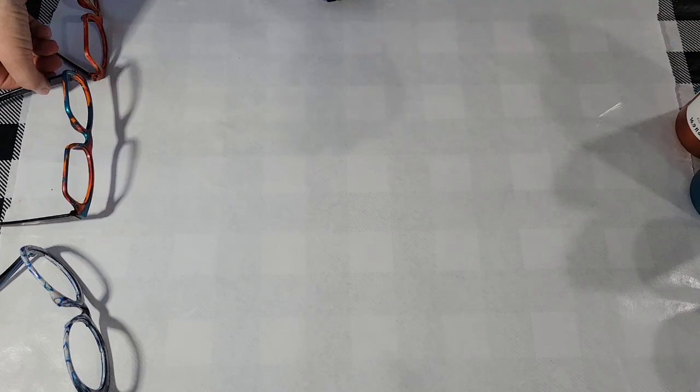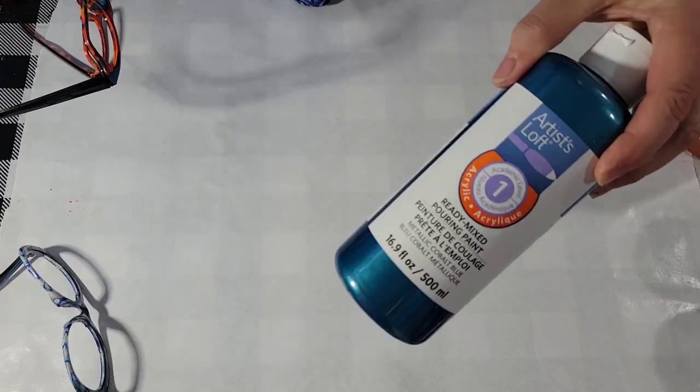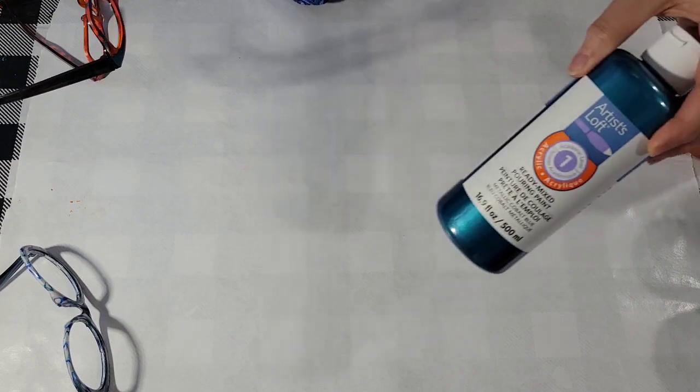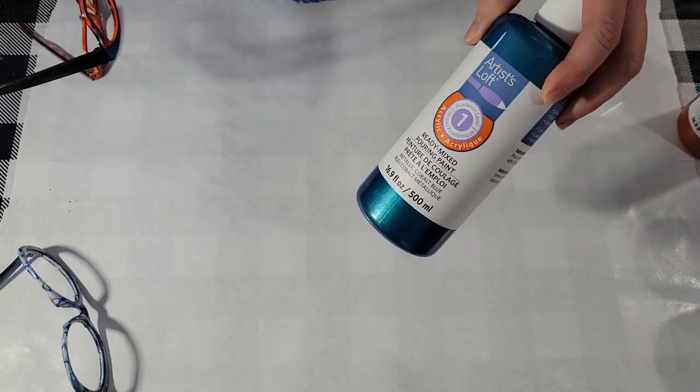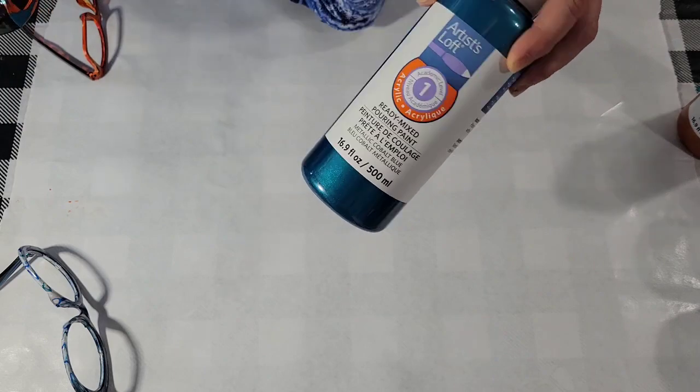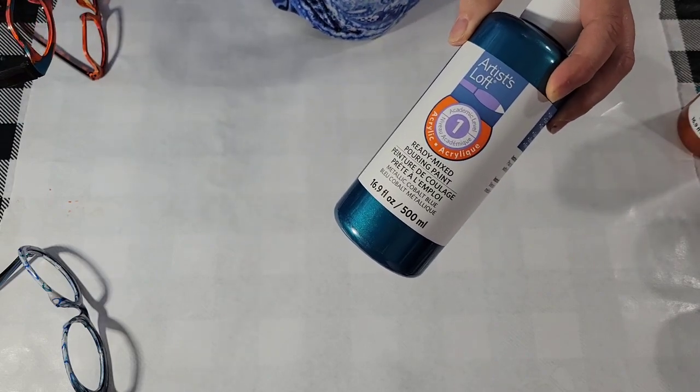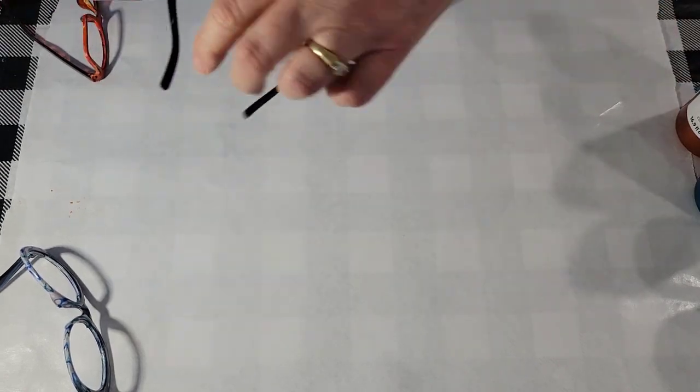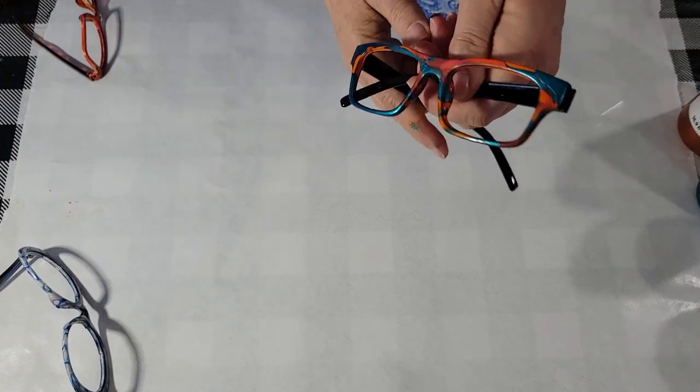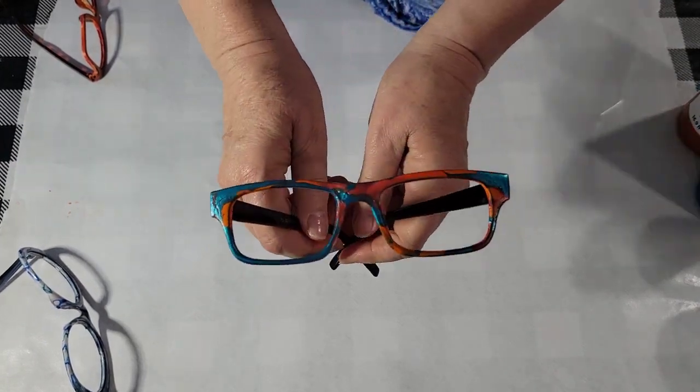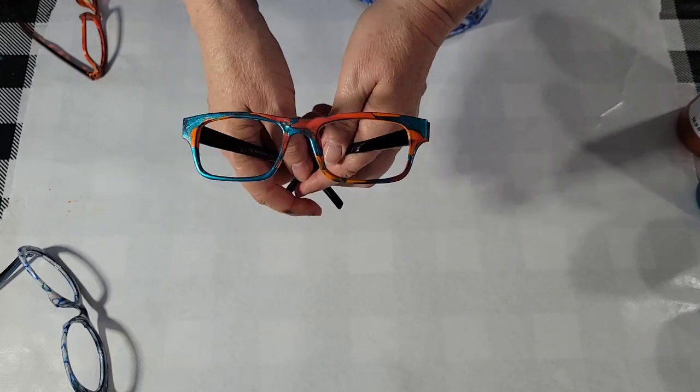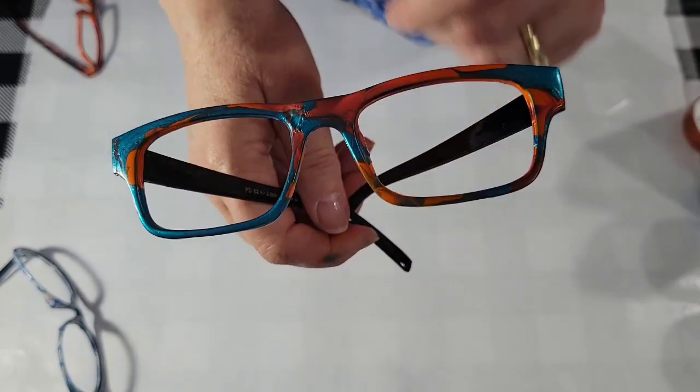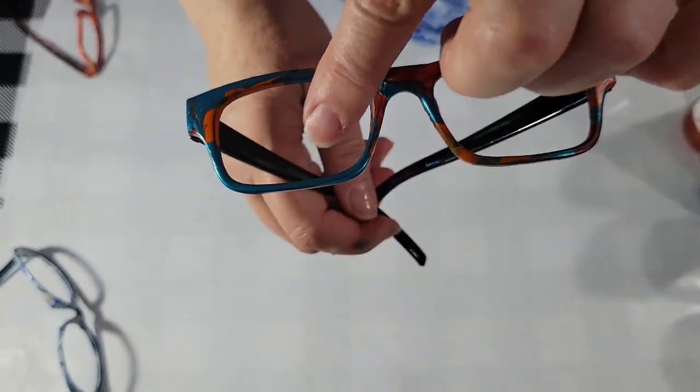Then I tried another one. And this time I used some of the same oranges and then some Artist Loft ready to pour paints because they dry with luster. And then I figured it wouldn't have to varnish. And this is a new color, metallic cobalt blue in the ready to pour paints. It's beautiful. And this is what I came up with. It's getting dark. I hope you can see. See the color there. There we go. And I think the cobalt is beautiful.